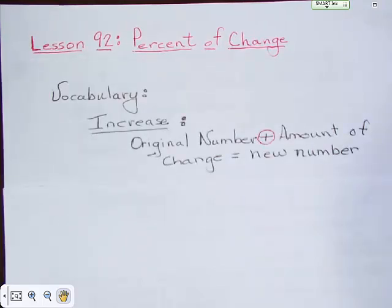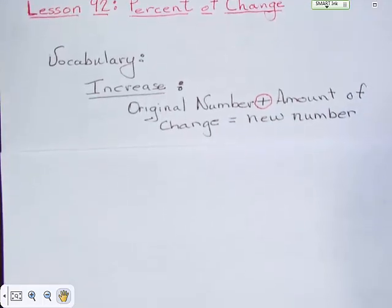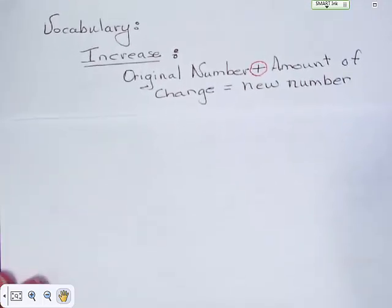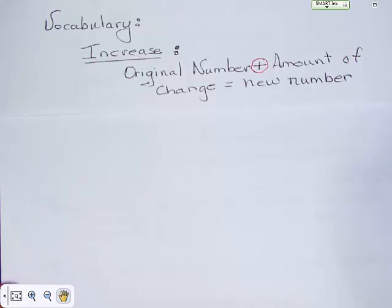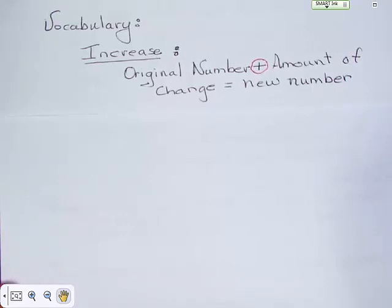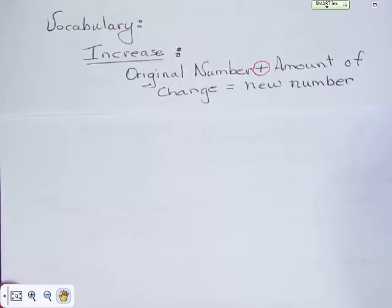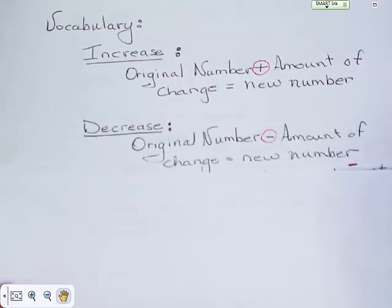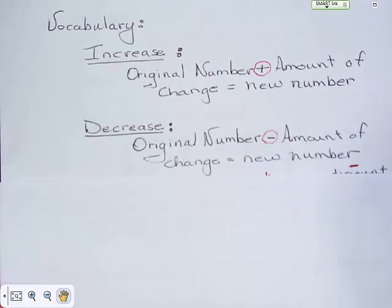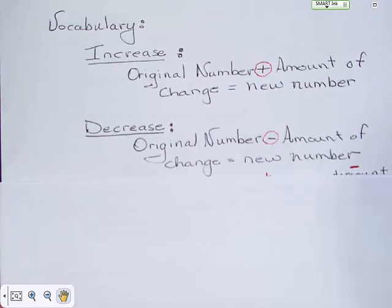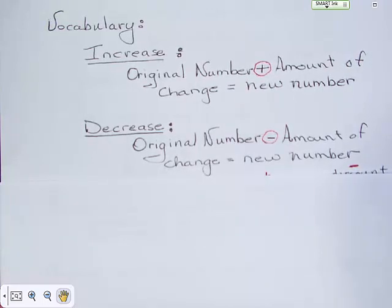There's a little bit of vocabulary that goes with percent of change. Increase is the original number plus the amount of change, which gives you a new number. Decrease is the original number minus the amount of change, and that also gives you a new number.